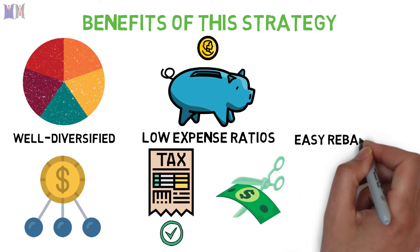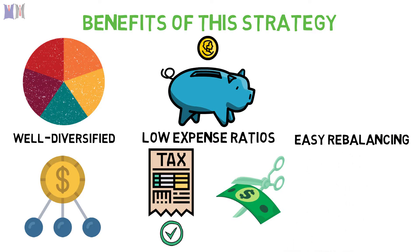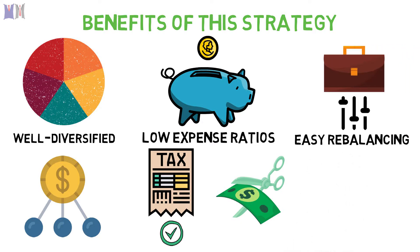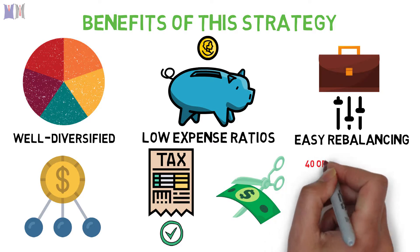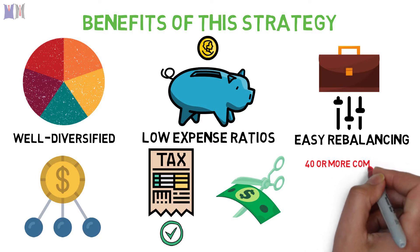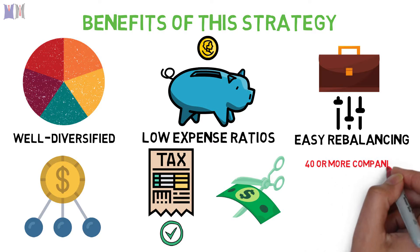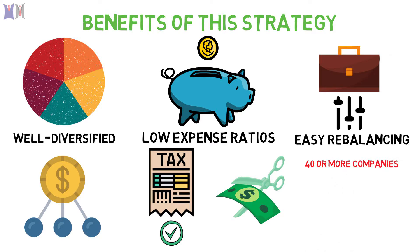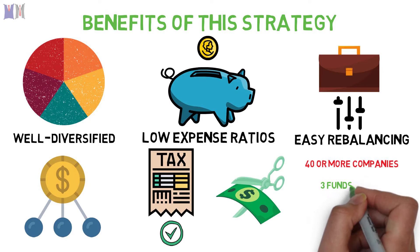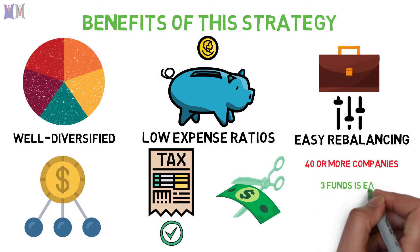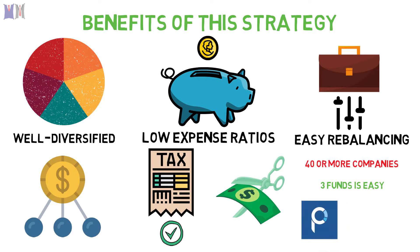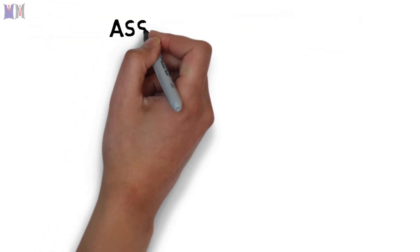Costs matter because what seems like just a small percentage fee can make a massive cut in your returns. Finally, this strategy also has easy rebalancing. Rebalancing is the process of periodically adjusting portfolio allocations to make sure you're still on target. Imagine a traditional buy and hold investor who may have 40 or more companies to monitor — rebalancing a 3 fund portfolio is insanely easy, and even more relaxed when using a free tool like Personal Capital for automatic monitoring.